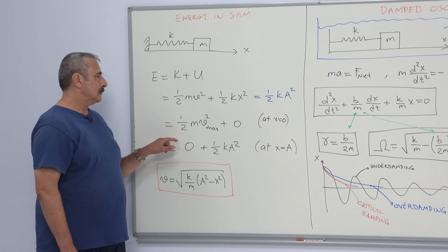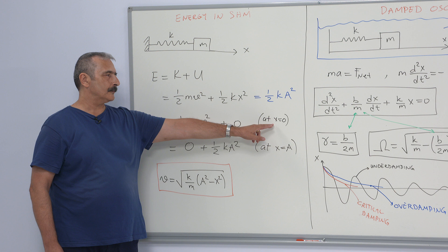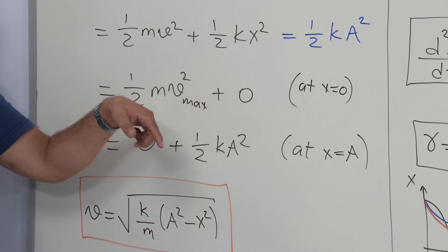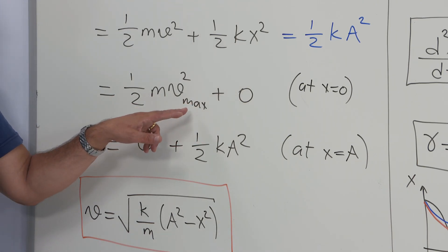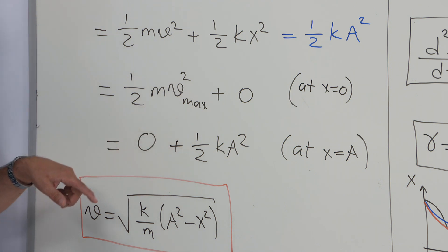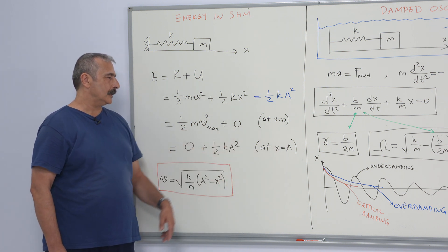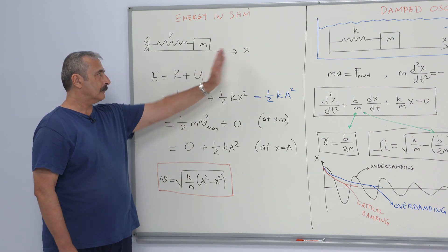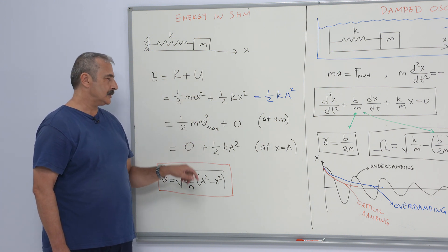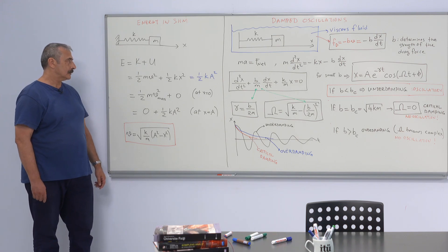Consider two limiting cases. When the object is passing through its equilibrium position at x equals zero, we have only kinetic energy — there is no compression or stretch in the spring, so we observe maximum kinetic energy and maximum speed. At the amplitude, when x equals A, the body momentarily stops, so there is no kinetic energy and the total mechanical energy is stored in the spring.